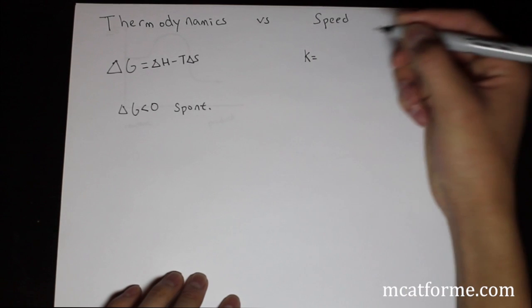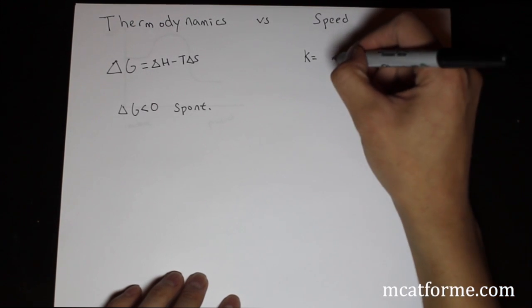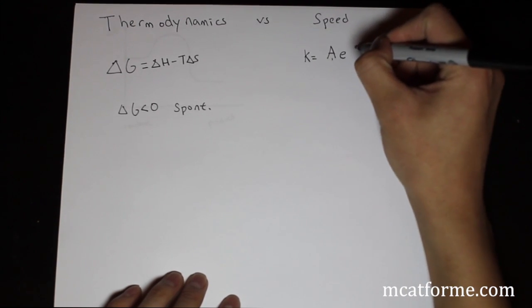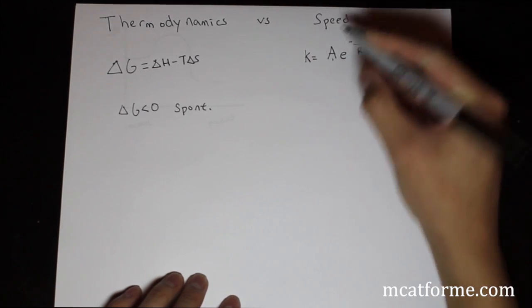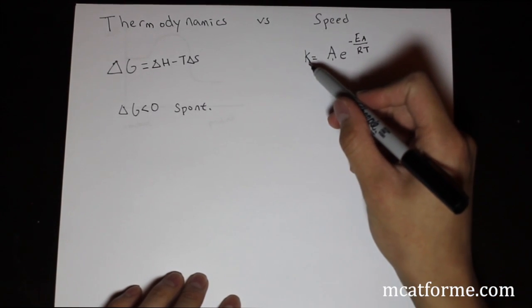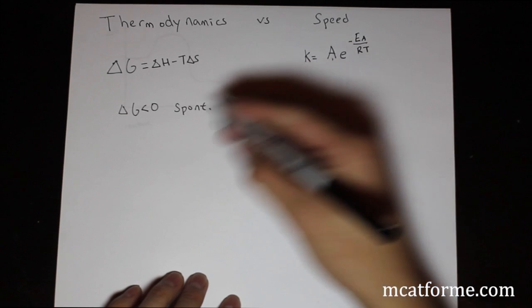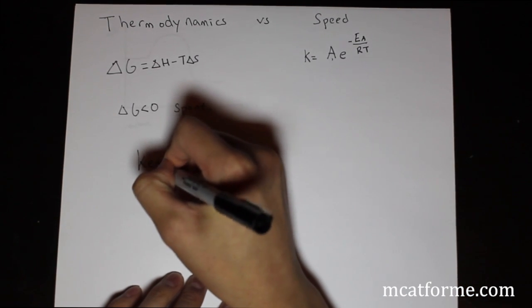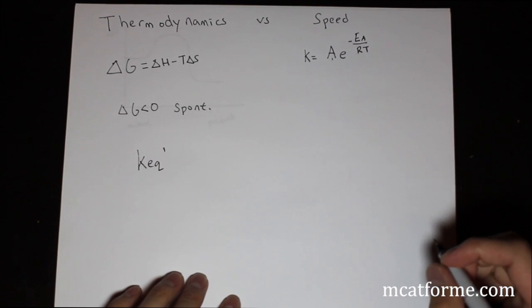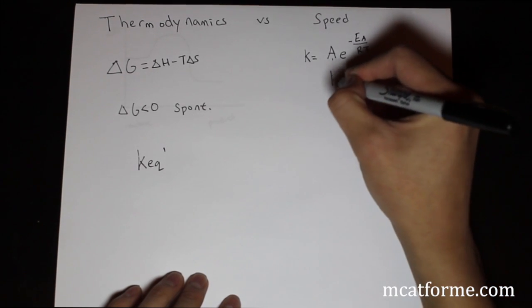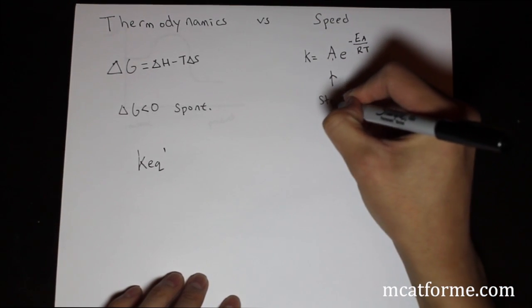So speed is determined by this equation: K equals A times e to the negative EA over RT. First thing I want to make clear is that this K is not the same K as we saw in thermodynamics, which was the KEQ prime. This K is the rate, so it's a lowercase K.